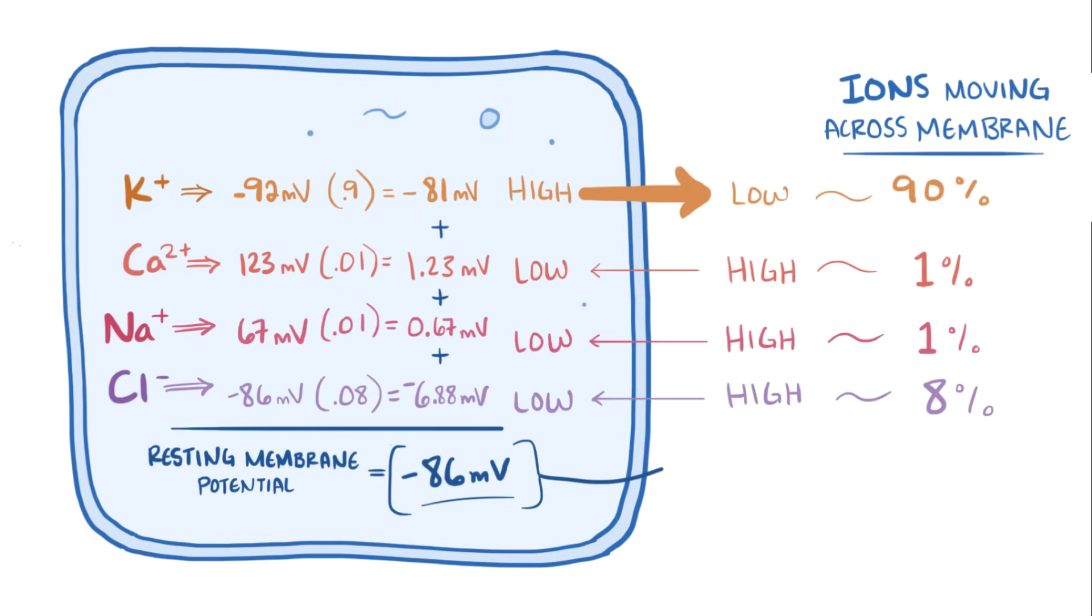Now this resting membrane potential is usually closest to whichever ion is the most permeable across the membrane, which in this case is potassium, right? But by changing the cell's permeability to ions by adding or removing ion channels, a cell can actually change its resting membrane potential.